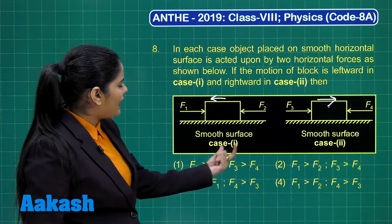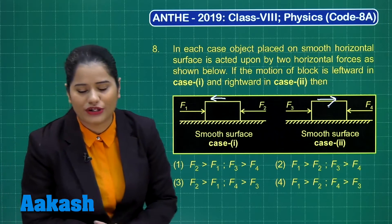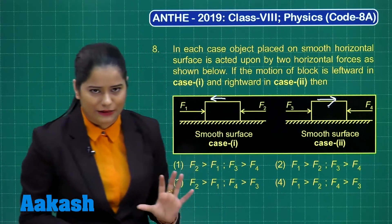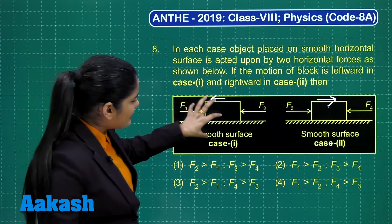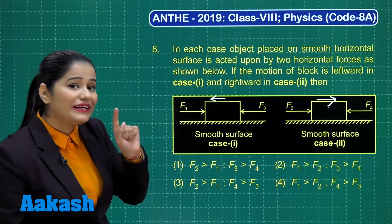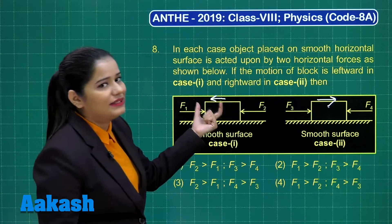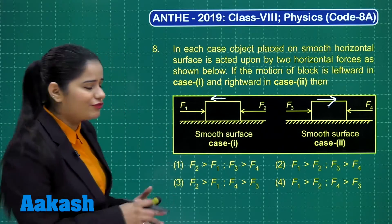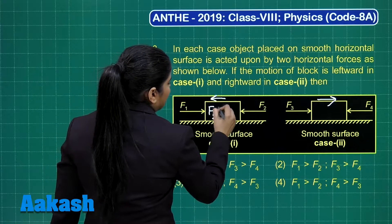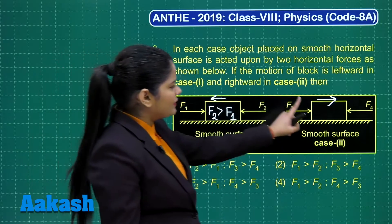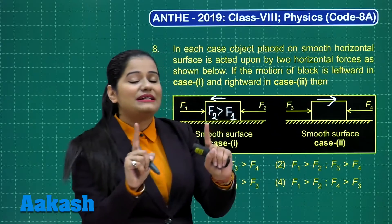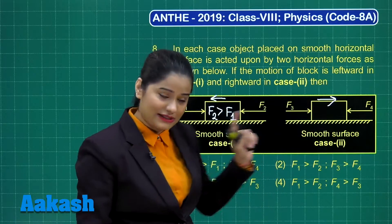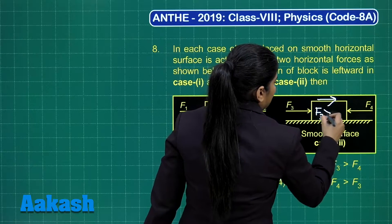Option one says F2 is greater than F1 and F3 is greater than F4. We need to determine which of F1, F2 is greater and which of F3, F4 is greater. Since the block in case 1 moves left, the net force is leftward, so F2 is greater than F1. Since the block in case 2 moves right, F3 is greater than F4.